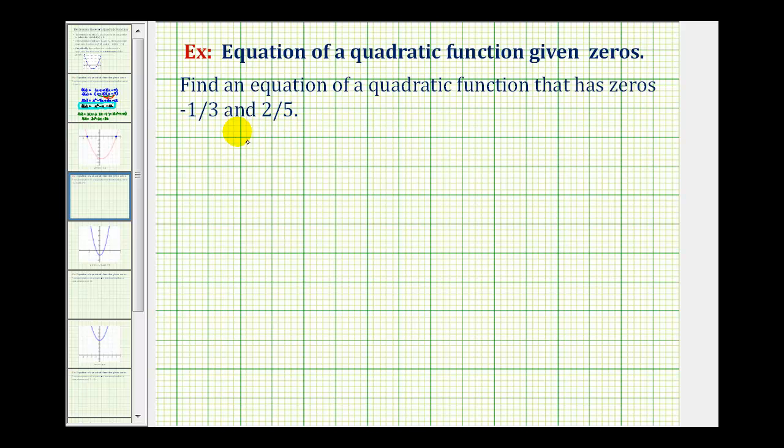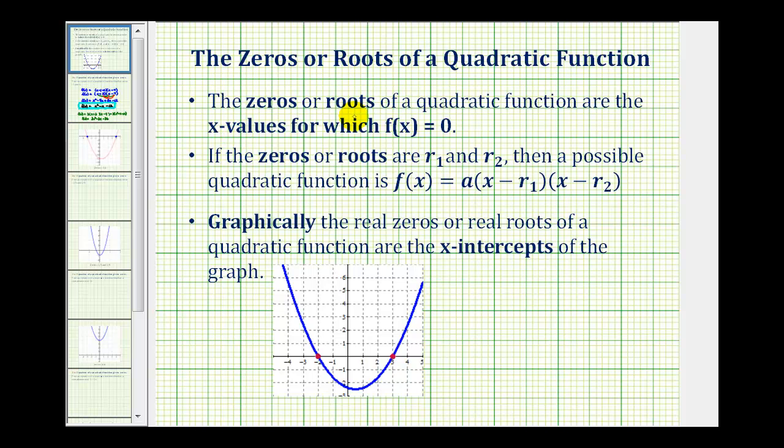Remember, the zeros of a quadratic function give us information about the factors of the quadratic function. So for a quick review, the zeros or roots are the x values that make the function equal to zero. If the zeros or roots are r₁ and r₂, then a possible quadratic function would be f(x) equals any constant a times a factor of x minus r₁ times a factor of x minus r₂.